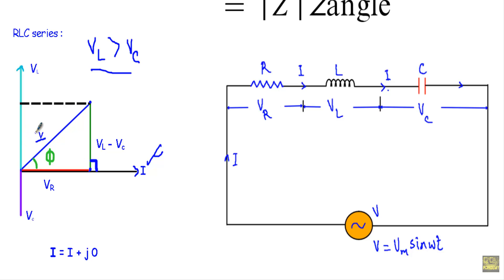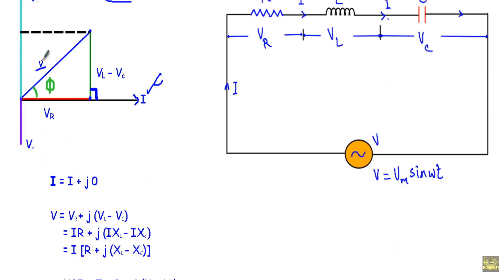The current phasor I equals I + j0, as we take I along the real axis. The applied voltage phasor V is the sum of VR, which is in phase with I, and (VL − VC), which is in quadrature with I — meaning it creates a right angle with the current phasor. Therefore V equals VR + j(VL − VC).